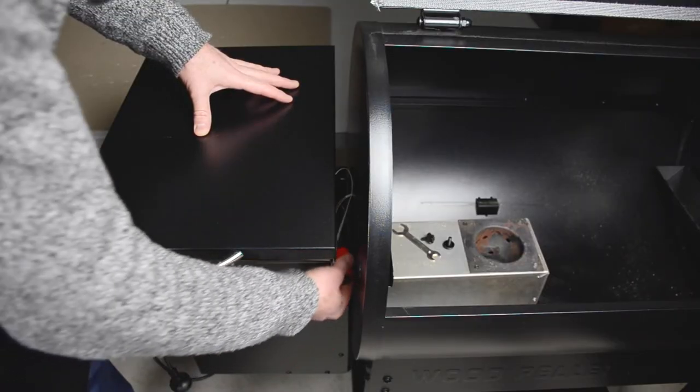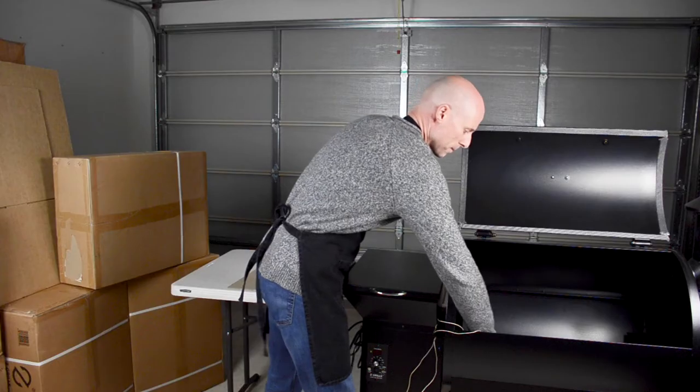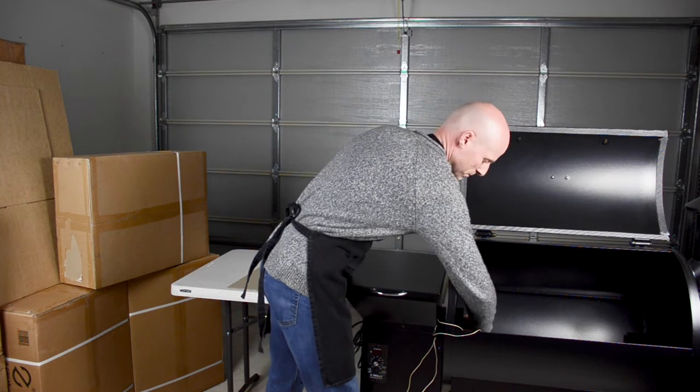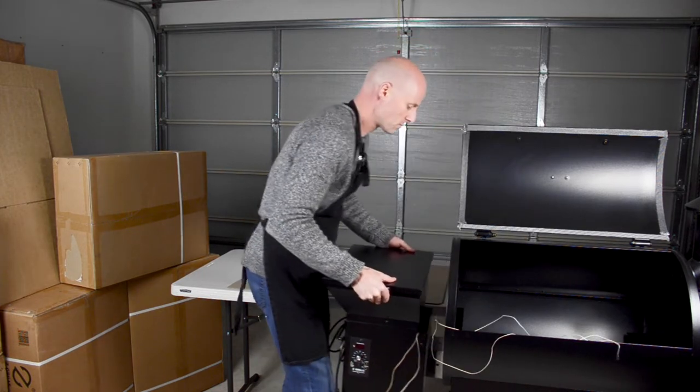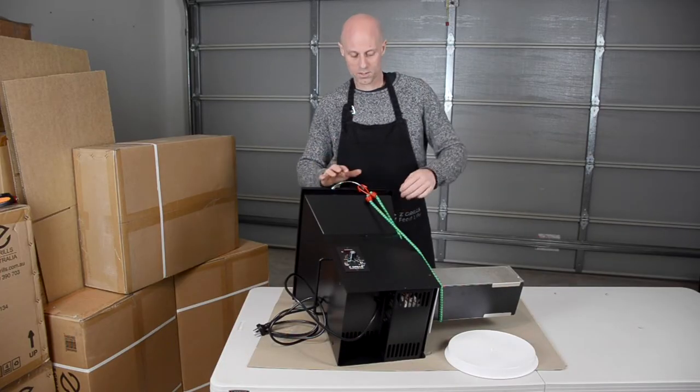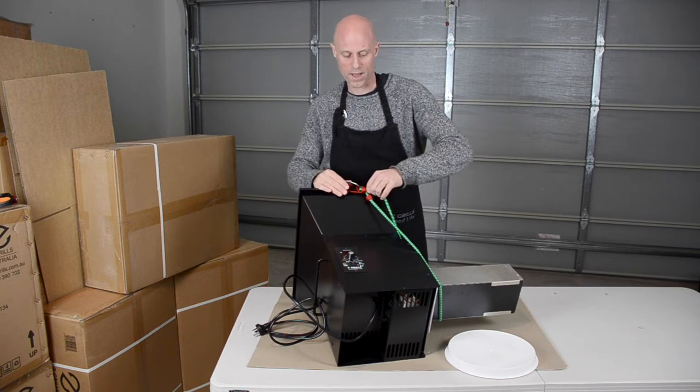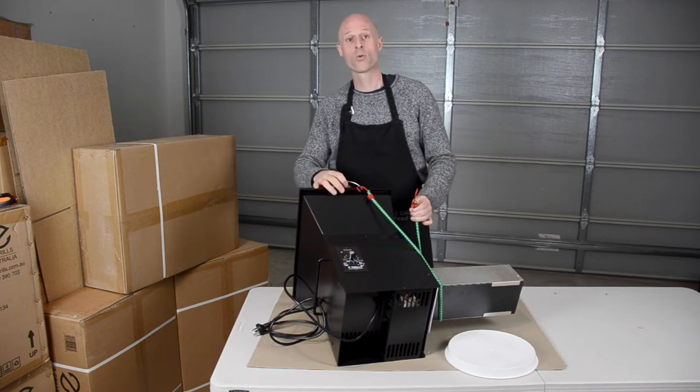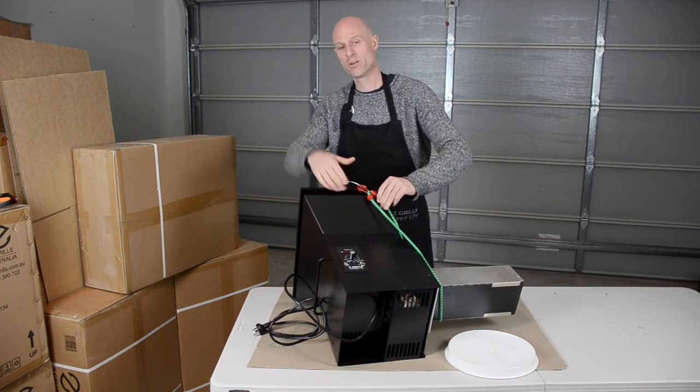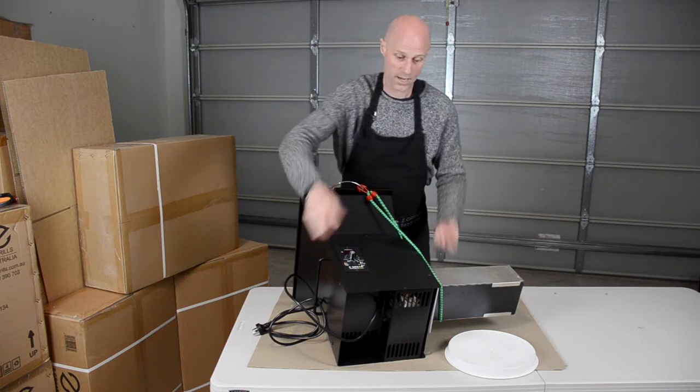The next thing you want to do is pull out this cable and disconnect it. Lift this out. One little tip is to just put a strap around or a little string around to hold the lid in place so when you flip it upside down it doesn't flip open. We can now turn it up this way.